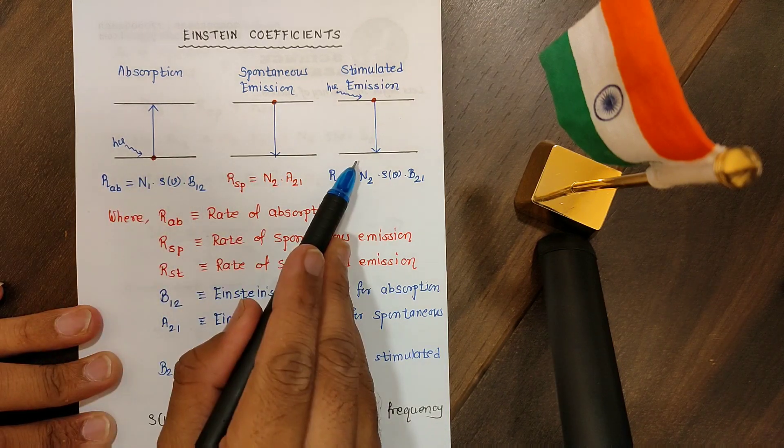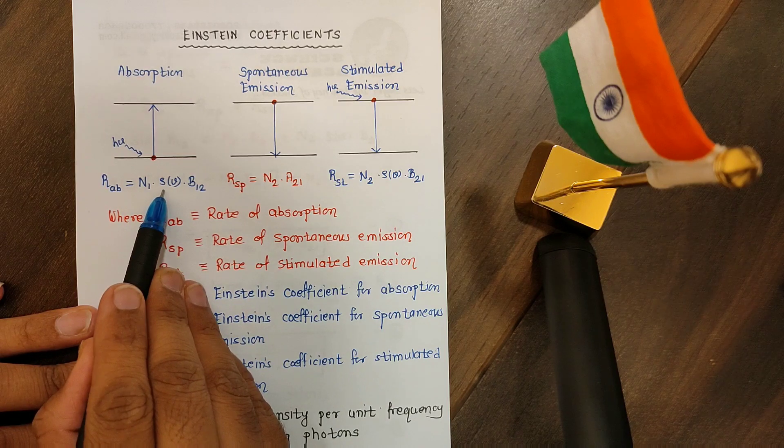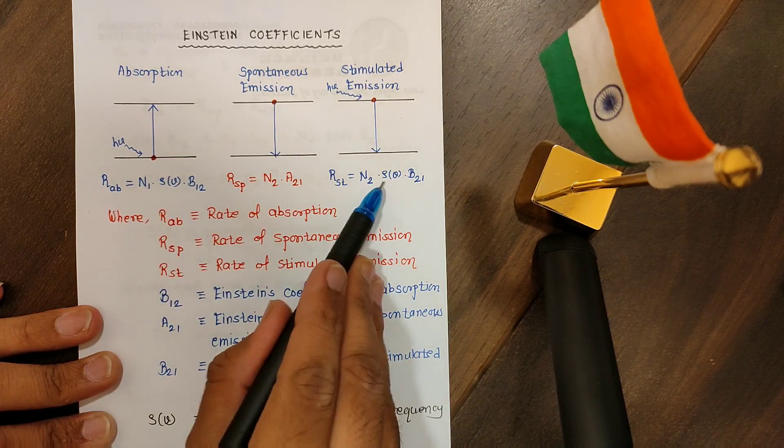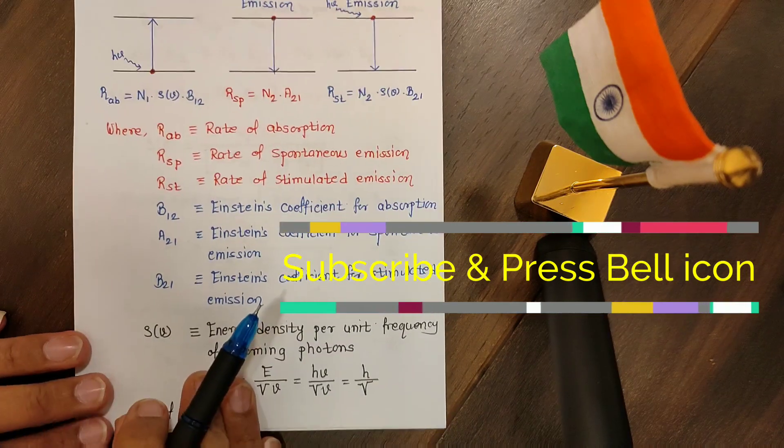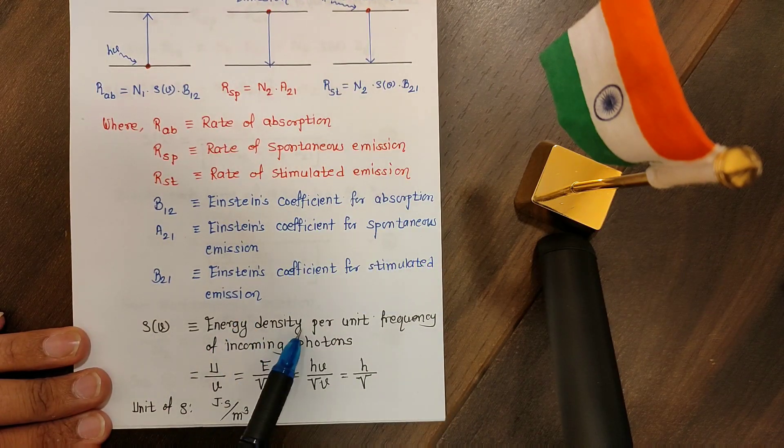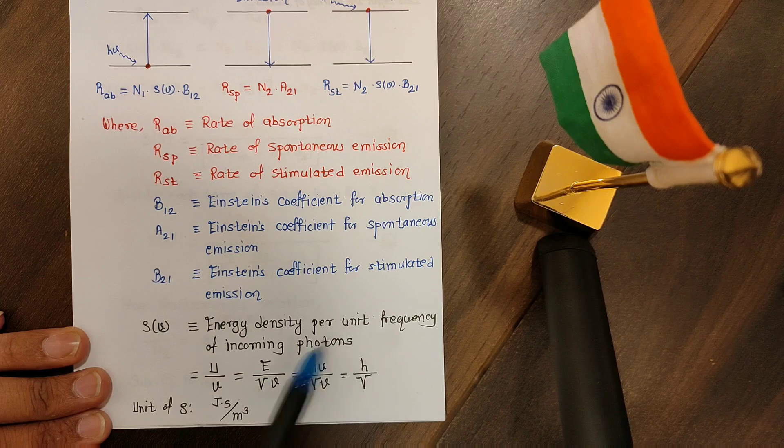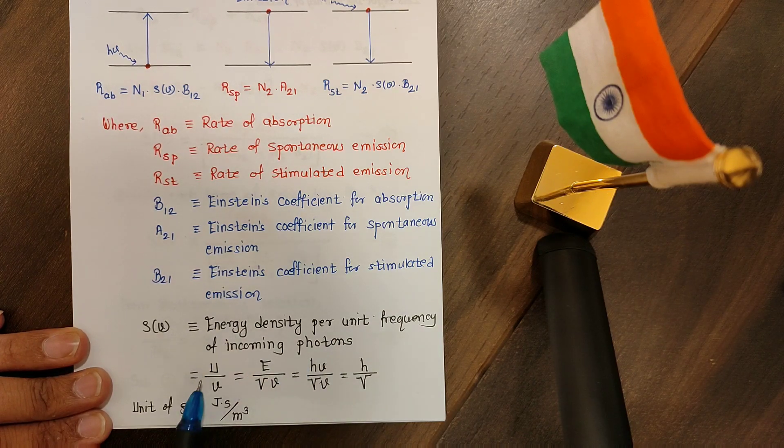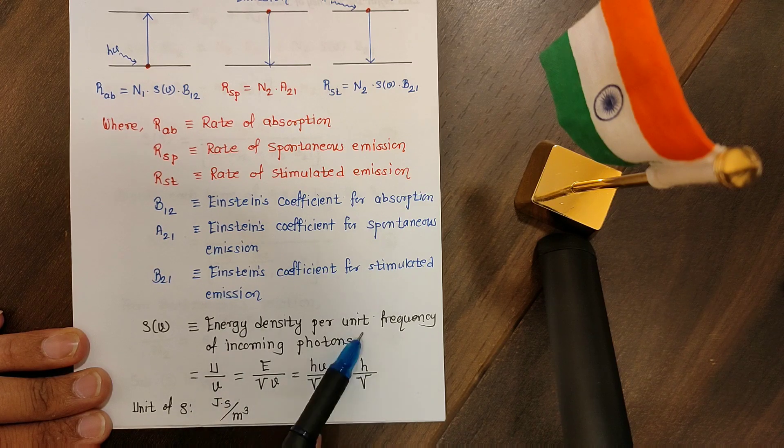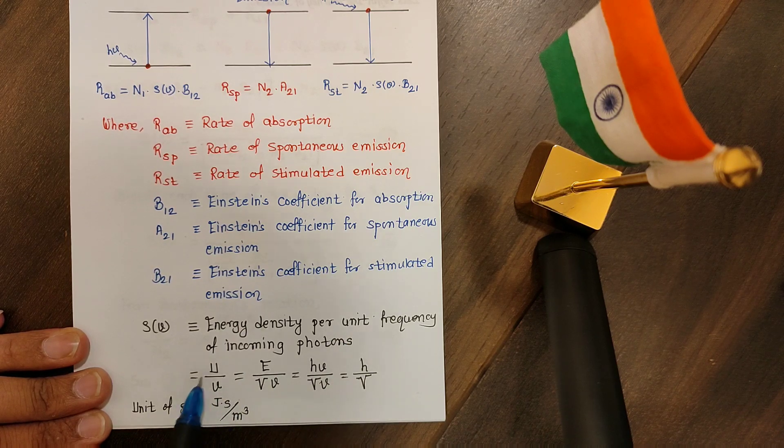Now we know that we require external photon in the first and the third process. That's the reason we are writing rho which is the function of nu. What is the meaning of rho which is the function of nu? It is the energy density per unit frequency of incoming photons.